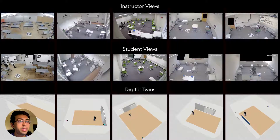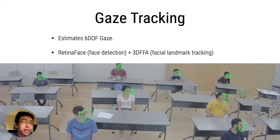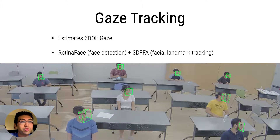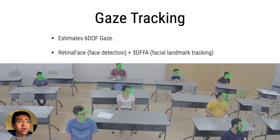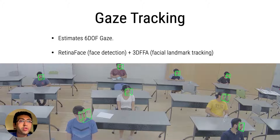This is what the digital twin looks like for different room scales and geometries. For gaze tracking, we built a separate computer vision pipeline that estimates the 3D position and 3D head rotation of students and instructors in the classroom. We start by first detecting all of the faces in the scene using RetinaFace and then run a landmark detection library along with SolvePNP to find the 6 degrees of freedom of the corresponding face.